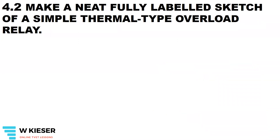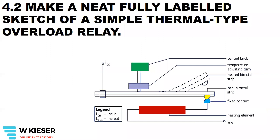Make a neat fully labeled sketch of a simple thermal type overload relay. There are four main parts to the thermal type overload relay: the heating element, the contacts, the bimetal strip, and the control knob, which is there to control the temperature.